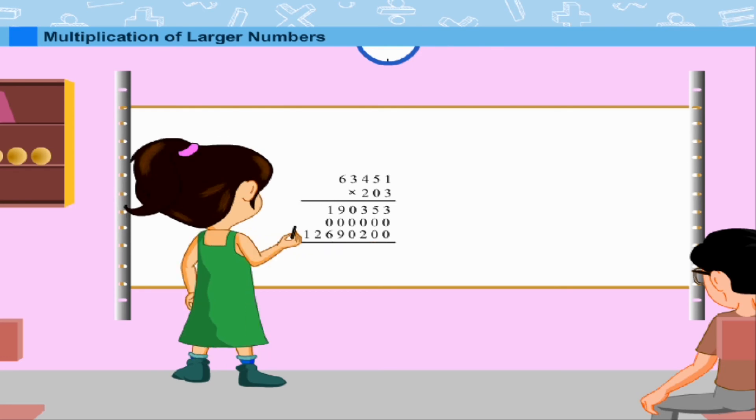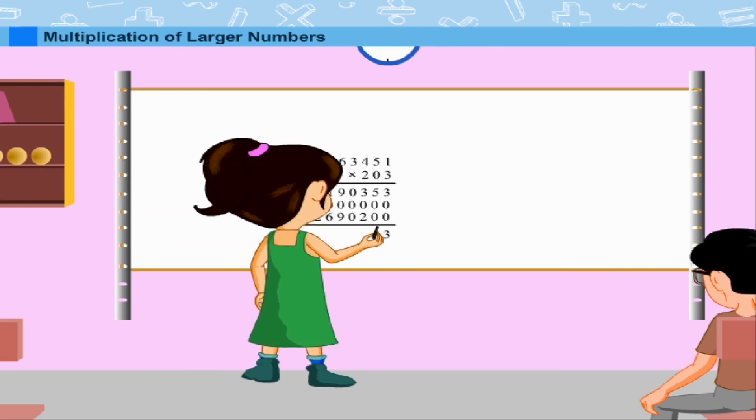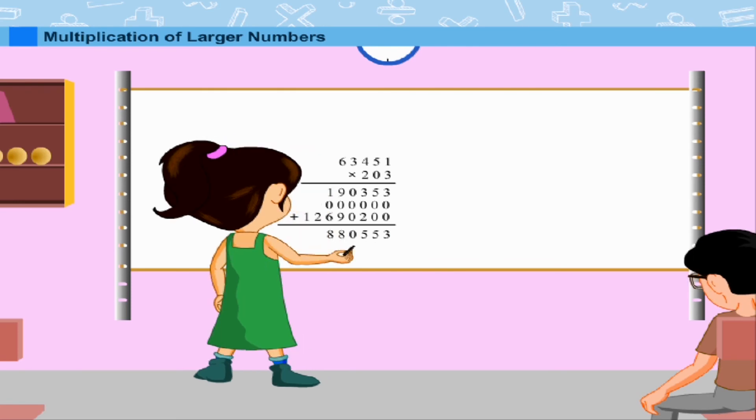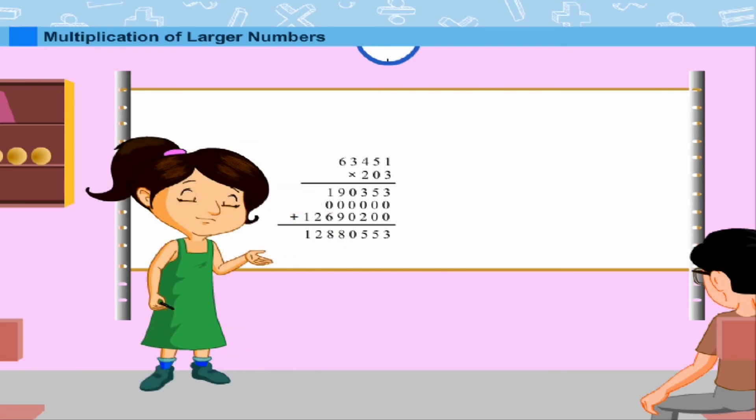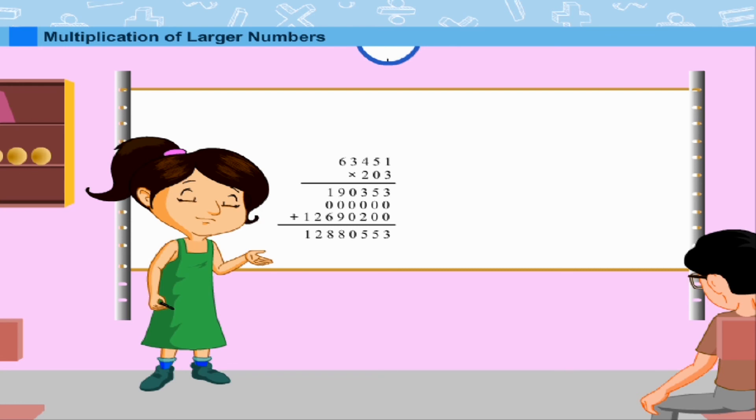Finally, she adds all three results to find the final product. So, 1,90,353 plus 0 plus 1 crore 26,90,200 equals 1 crore 28,80,553. Rahul has understood the steps now.